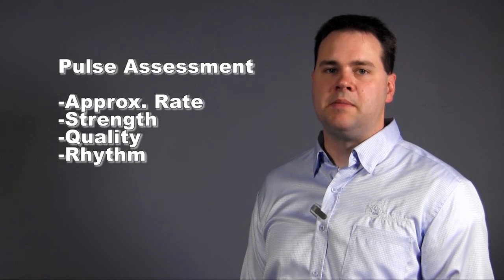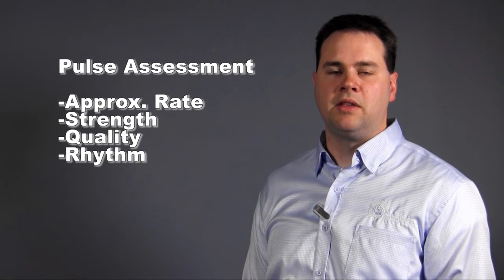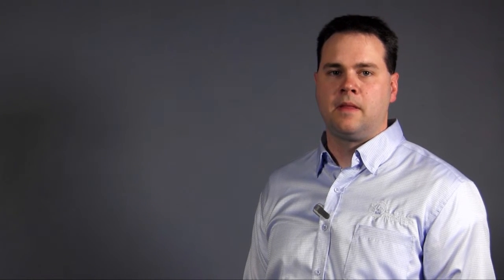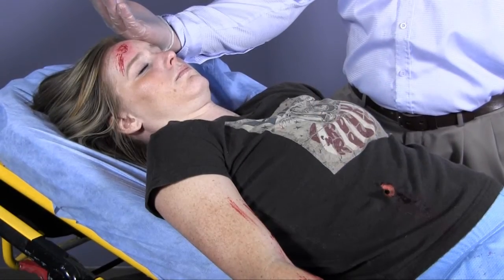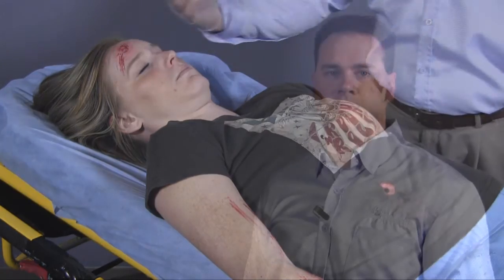Now I assess circulation. I check for the presence of a pulse at the carotid artery or radial artery, depending on the patient's level of consciousness. When I check for a pulse, I am assessing for approximate rate, strength, quality, and rhythm. I will control any obvious life-threatening bleeding. I assess for skin condition, including color, moisture, and temperature. I evaluate and initiate shock management as needed.